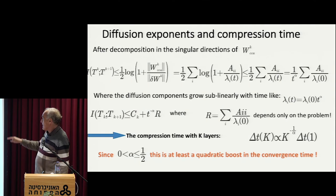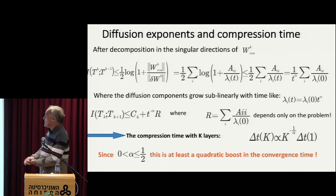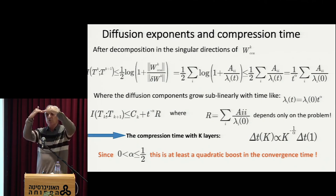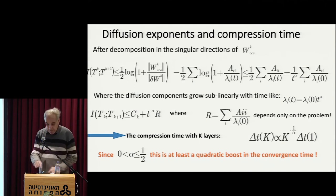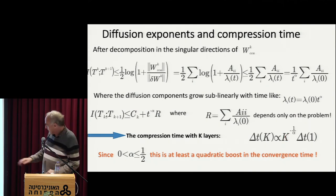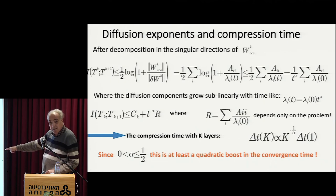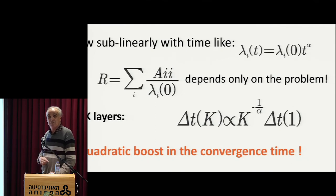Essentially, this tells you — and then we can actually rigorize and prove very carefully everything I said here — because of this parallel increase in the diffusion of the irrelevant weights, the ratio between them is going to decrease. I'm going to decrease the signal-to-noise ratio and therefore compress because I'm losing information. That's the basic prediction of this analysis: the time that it takes to converge to a certain level with K layers goes like the number of layers to minus one over the diffusion constant times the time that it takes to converge with one layer.